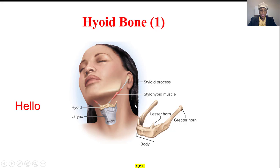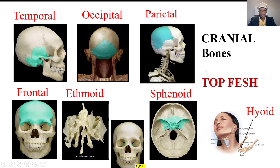Then the hyoid — 'hyoid halo,' like your neck, the voice box, hyoid. Let's look at them again together: temporal, occipital, parietal, frontal, ethmoid — you see part of it here — sphenoid and hyoid. The mnemonic: 'tap fish.'